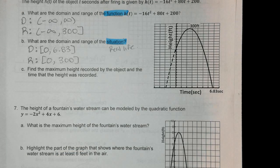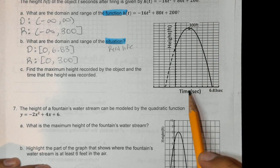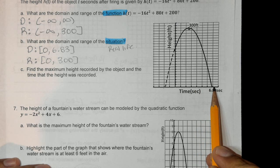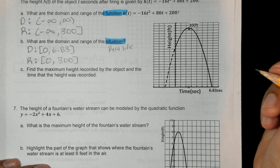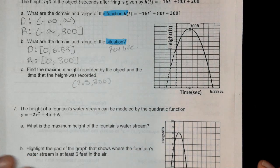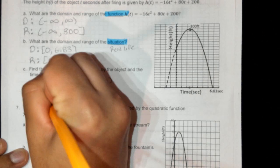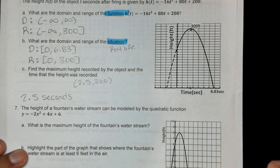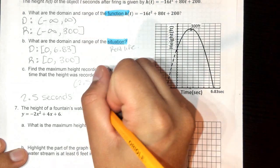For part c — the maximum height: the vertex is at 300 feet. Looking at the x-axis going by ones, the maximum occurs right in the middle at 2.5 seconds. So the maximum is at (2.5, 300), which means in 2.5 seconds we reach a height of 300 feet.